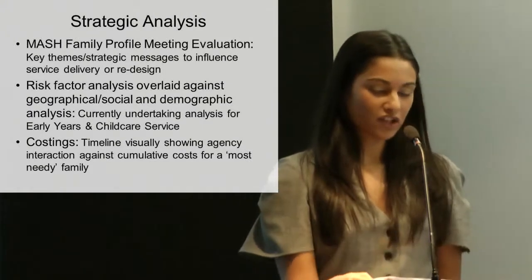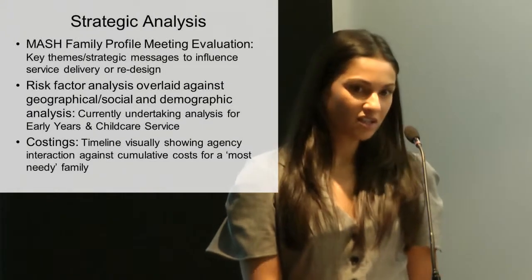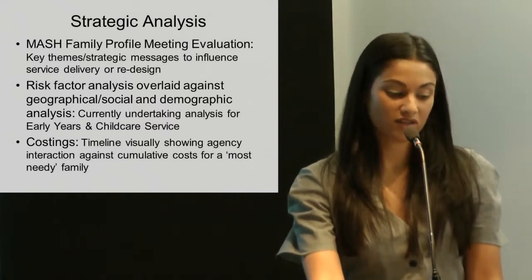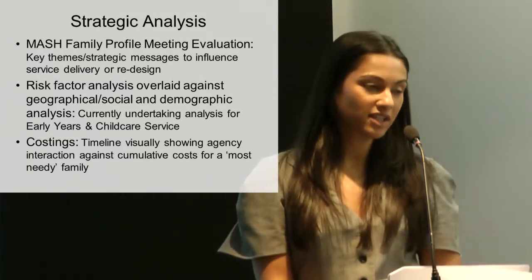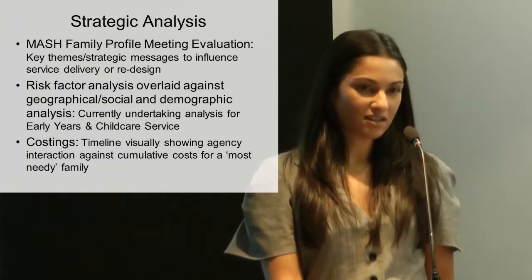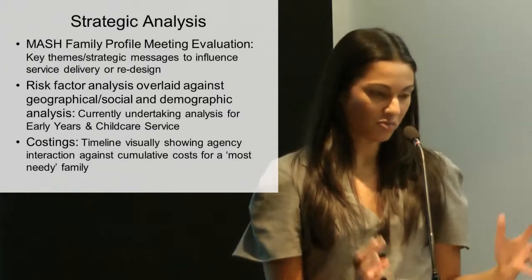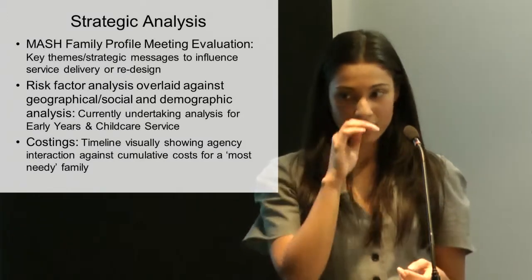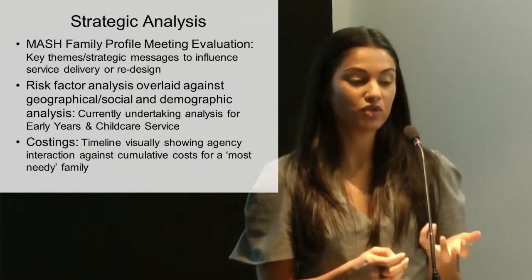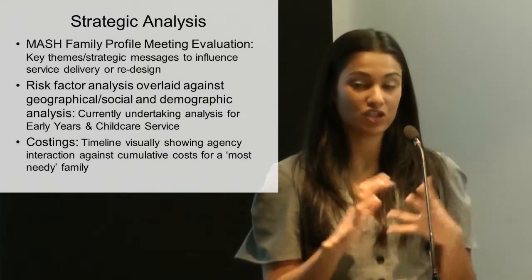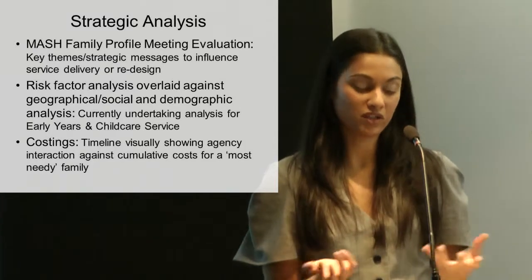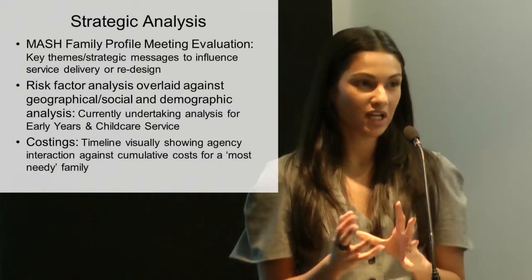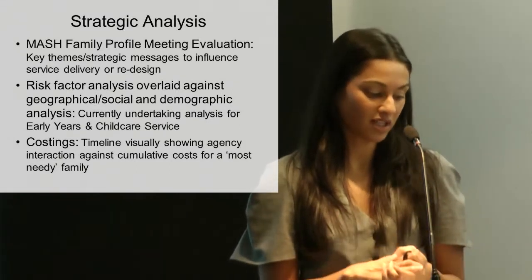At the strategic level, we've just started to evaluate the MASH family profile meeting and we've already seen some really key strategic messages and themes come out of it. These include over-optimistic plans for closure of cases at level 3 child protection, a clear focus on the presenting issue that comes through on an inquiry but less consideration of the case history as a whole, and a lack of de-escalation of level 3 child protection cases down to level 2 more consent-based interventions.